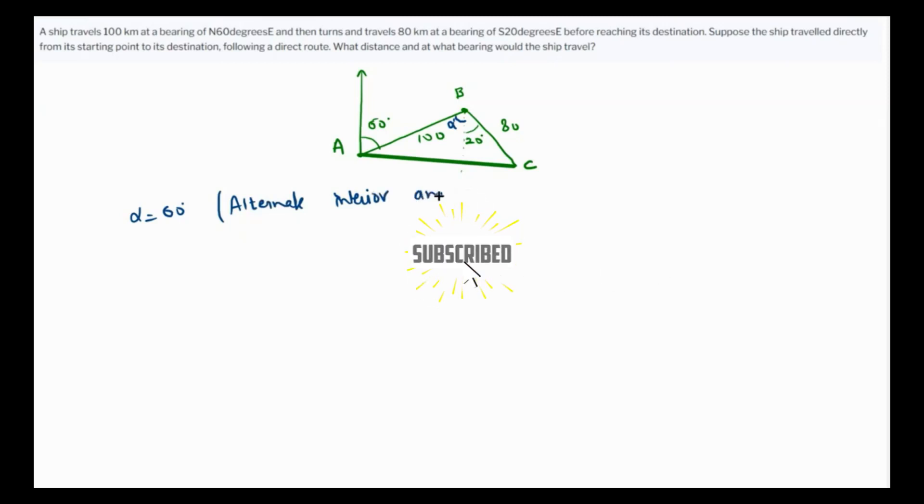I think law of cosines would be extremely helpful in this case. Let me draw the same triangle here exclusively so it's easier to analyze. This is A, this is C, this is B. Alpha is 60, 60 plus 20 is 80. This is 100 and this is 80.